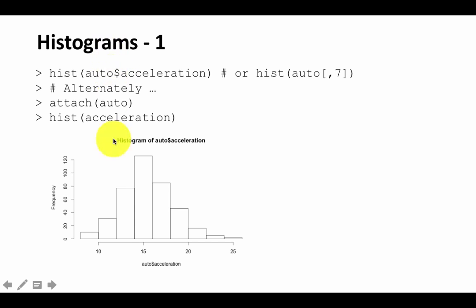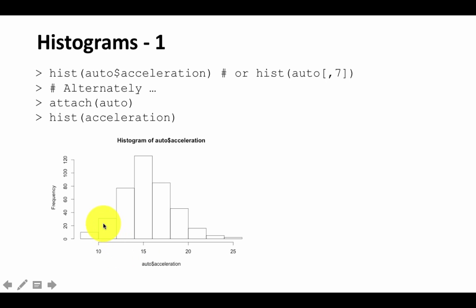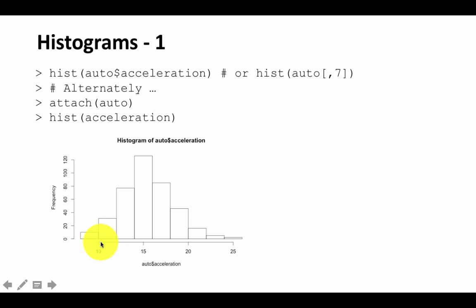By default, when you do a histogram, R figures out how many bars to create on the x-axis, and the y-axis is always the frequency count. This is telling us that between 10 and 12.5, we have roughly 30 rows with acceleration in that range, and roughly 10 rows with acceleration between 7.5 and 10. The maximum frequency appears to be a little above 120.